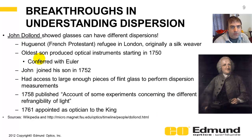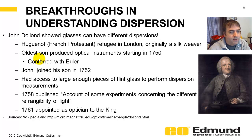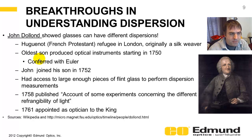It was John Dollond who really made the breakthrough in understanding that dispersion in glass truly does vary by glass type, depending on what materials are in it. Dollond was a silk weaver, and his son produced optical instruments starting in 1750. His son wrote letters with Euler about correcting chromatic problems. Dollond joined his son, gained access to large enough pieces of flint to perform dispersion measurements, and in 1758 published his results in 'Account of Some Experiments Concerning the Different Refrangibility of Light.' Refrangibility is an old term for refraction. In 1761 he was appointed optician to the king.